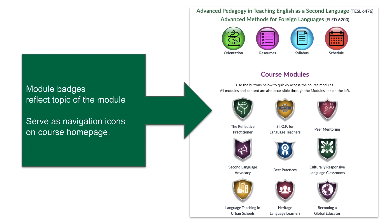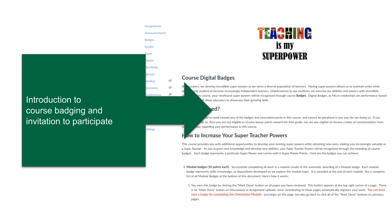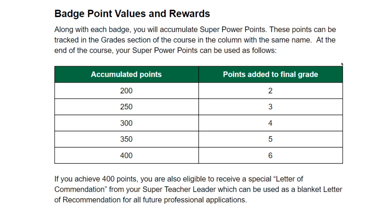So I created module badges. Here you see the home page of my Canvas course and the badges I created, which reflect the themes of each module of the course. In the course orientation, students are introduced to badging and how it's used, but they are not required to participate — that is, to complete the requirements that would allow them to obtain badges. The gamification comes in when they accumulate badges; the different types of badges equate to certain points, and at the end of the course, that could add points to the final grade.